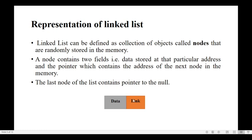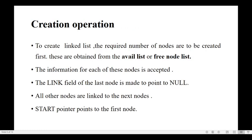A node has two parts: a data part and a link part. In the data part we store the data, and in the link part we store the address of the next node. So a linked list is a collection of nodes, each node having a data part to store information and a link part to store the address of the next node.